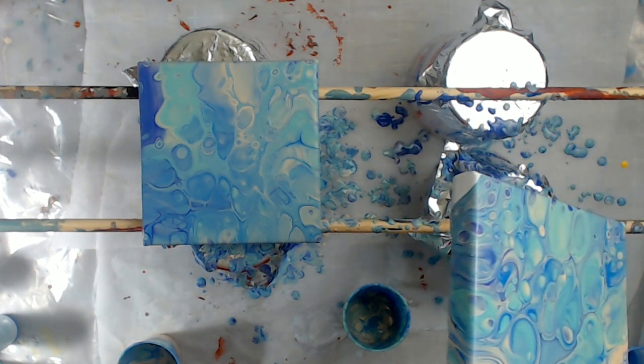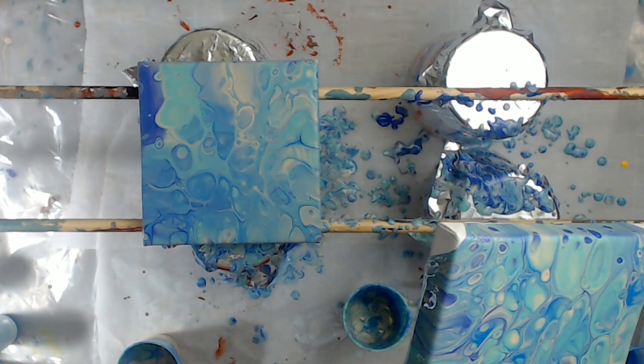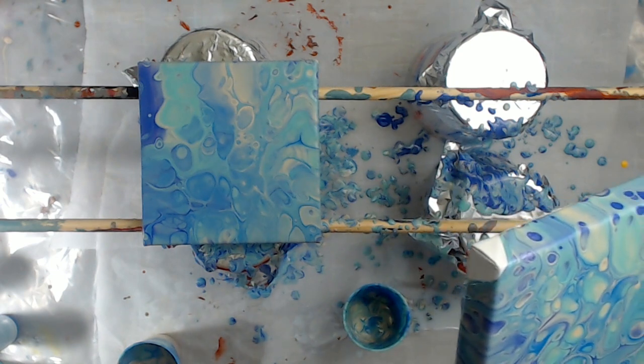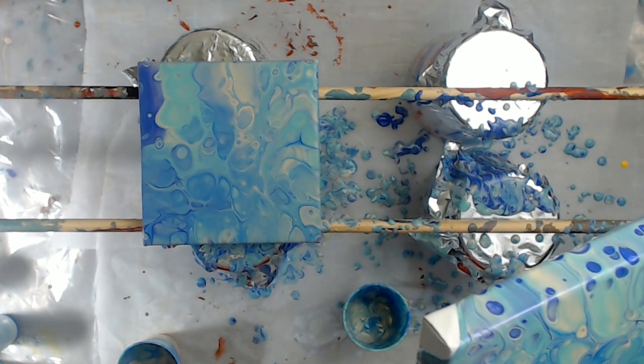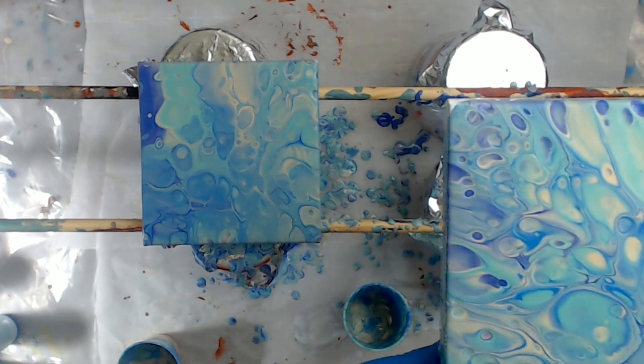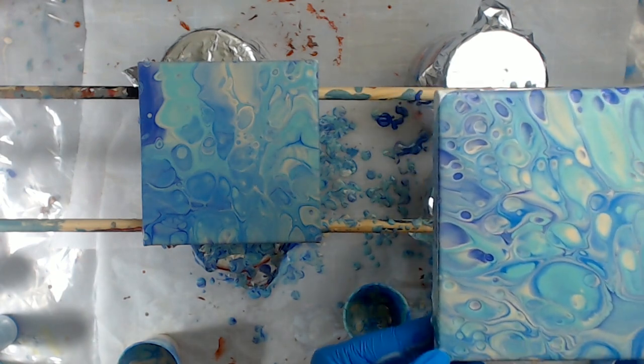I don't know if you can tell or not, but again this one doesn't move as much. You don't have to torch to get cells, just FYI. I'm trying not to drip it on the other canvas and still let you see.